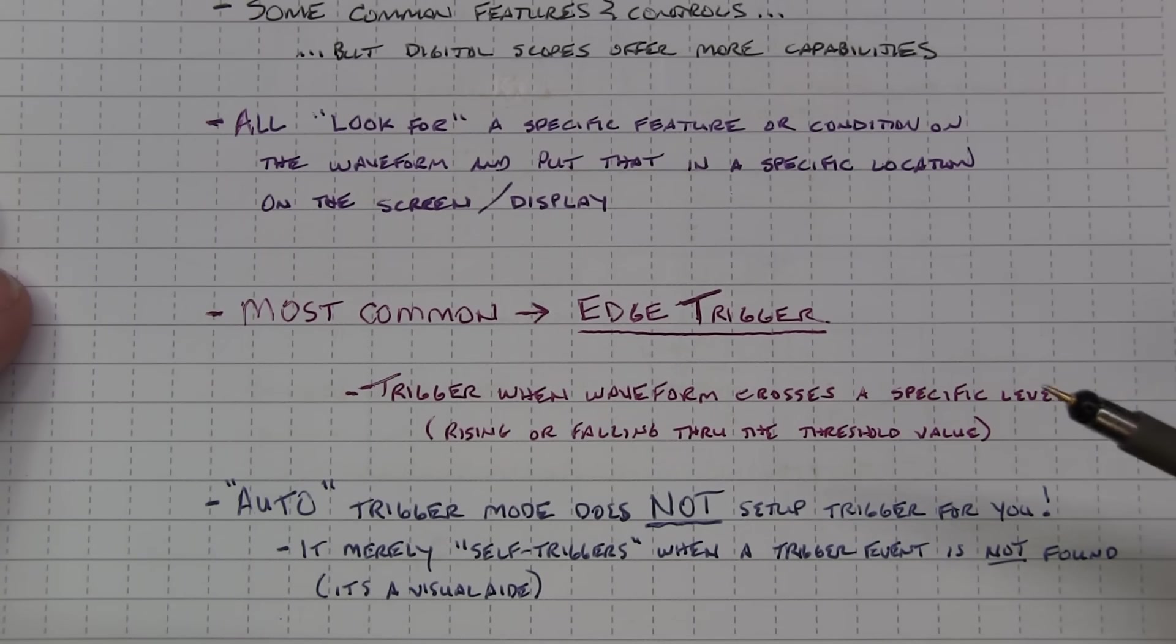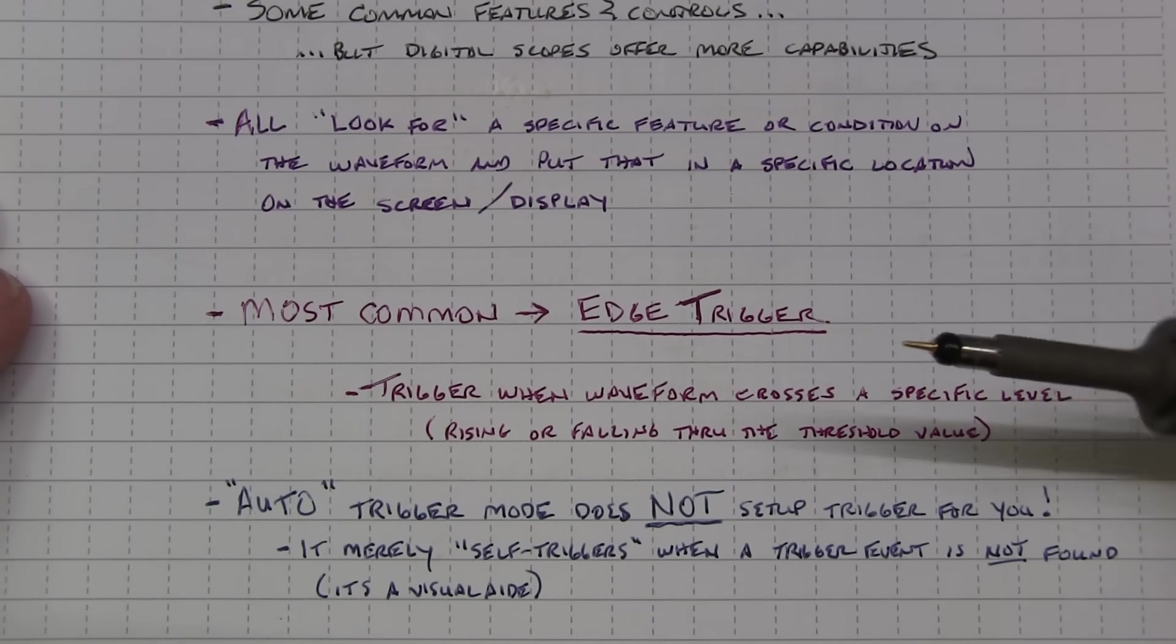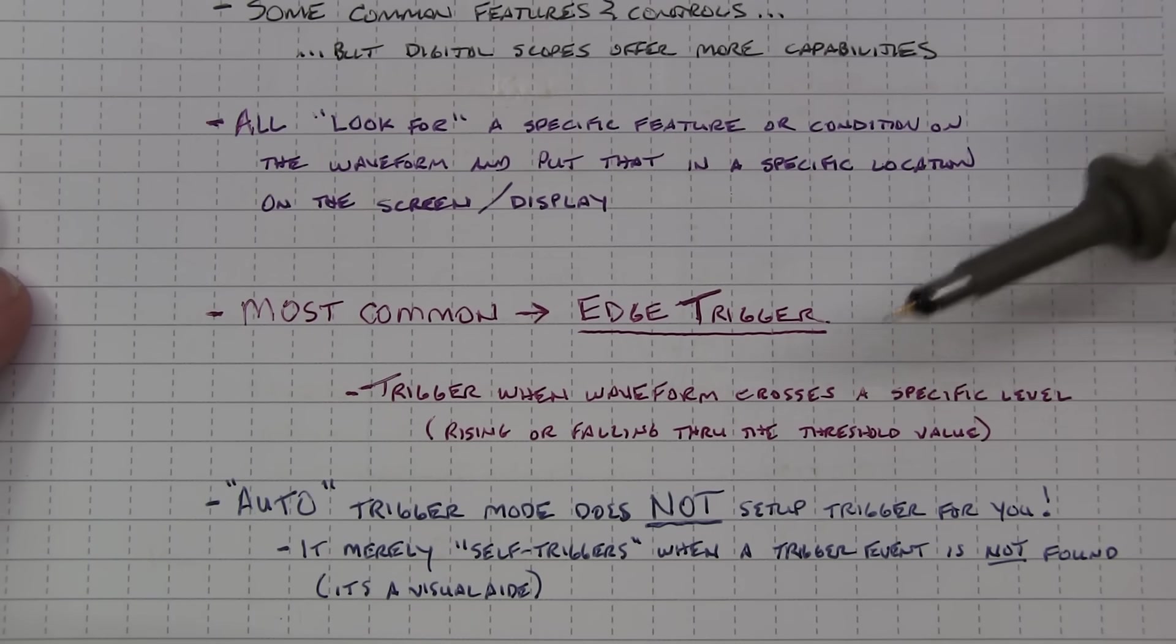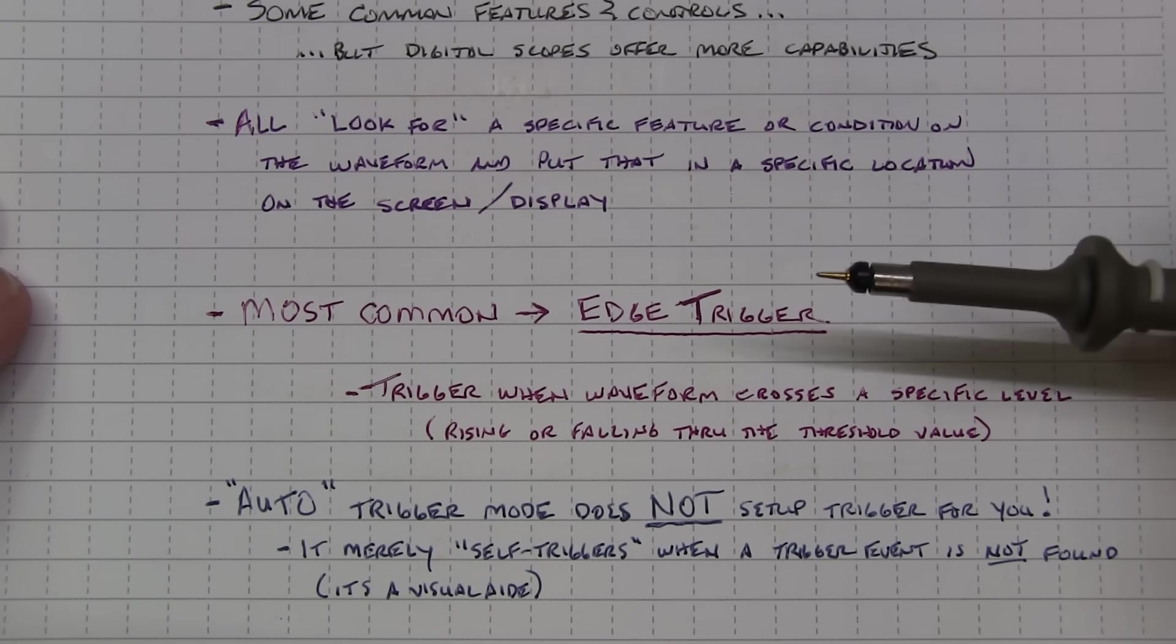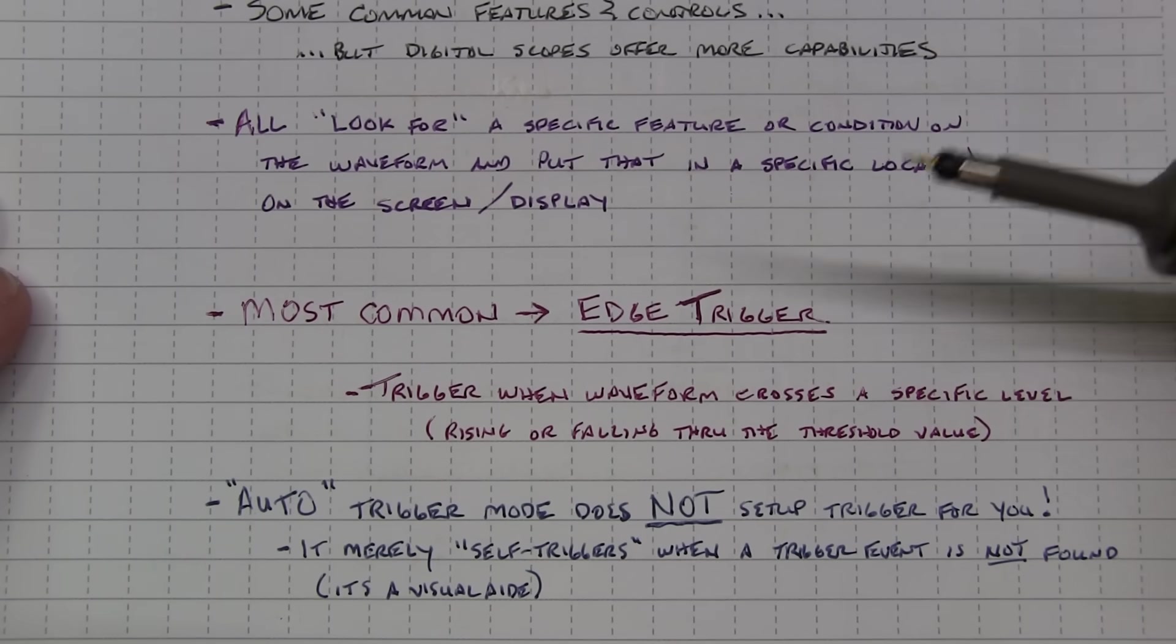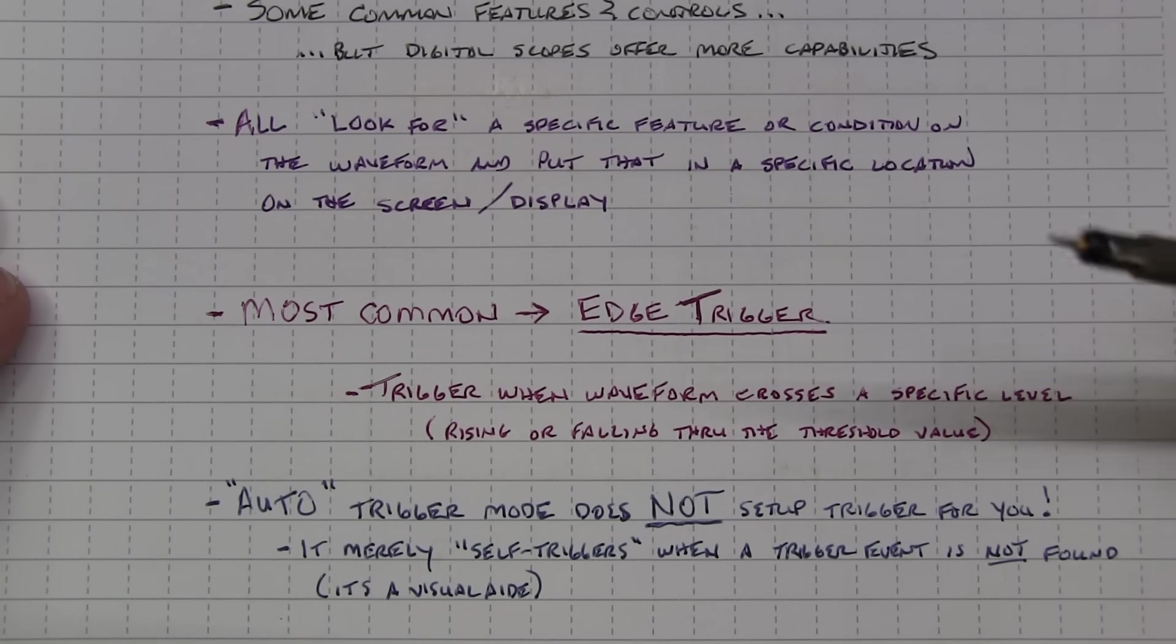Now there are an awful lot of different trigger types and trigger controls. I'm not going to go through all of that in this video. But I will link down in the description links to several other videos that I have that talk about various aspects of triggering in terms of controls and features and modes. We're just going to cover some of the basics here today to just take some of the mystery out of it.